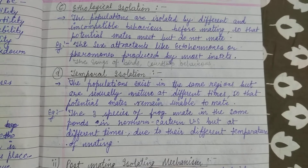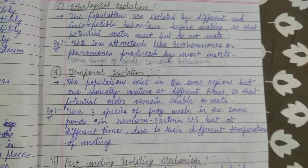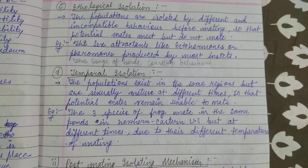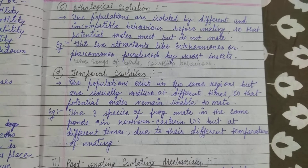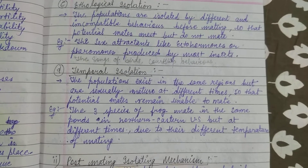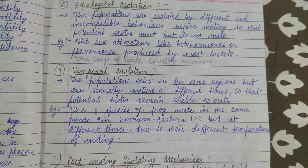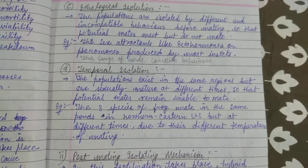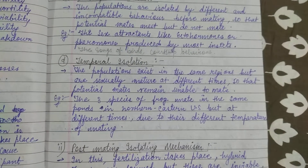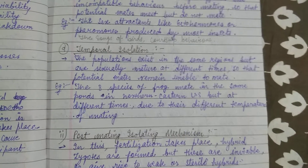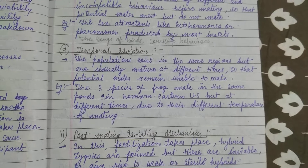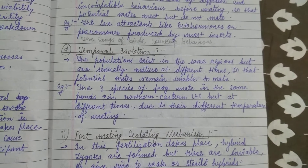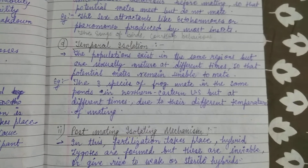In ethological or behavioral isolation, sex-attractant hormones and pheromones produced by most insects, as well as birds' courtship behavior, prevent inter-specific mating.